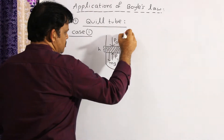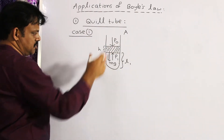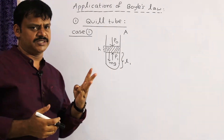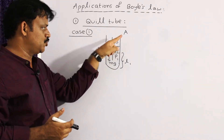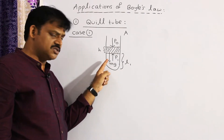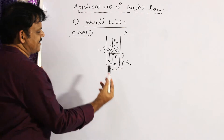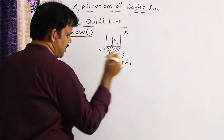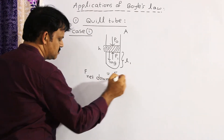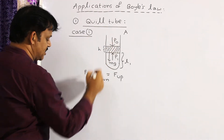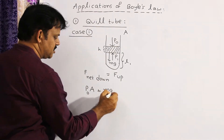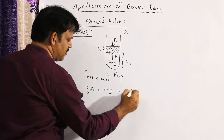Let the area of cross-section of the tube be capital A. Since the area of cross-section is uniform throughout the tube, there are three forces in this case. One is force due to atmospheric pressure, P0 into A, downwards. Another is the weight of the mercury pellet, Mg, downwards. And another force is due to the air column acting upward, P1 into A. The net downward force must be balanced by the upward force.